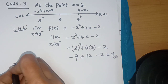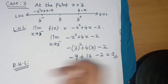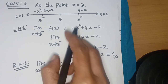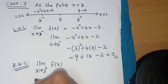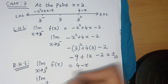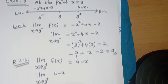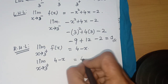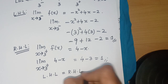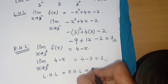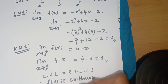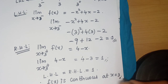Right Hand Limit: limit as x tends to 3⁺ of f(x) = 4 - x. Substituting x = 3: 4 - 3 = 1. So LHL = RHL = 1. Therefore f(x) is continuous at x = 3. This is the final answer. Thank you, please subscribe.